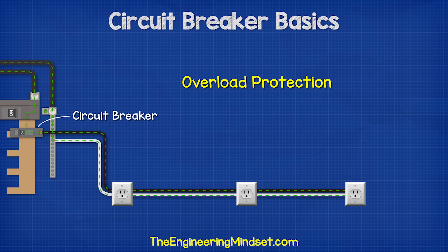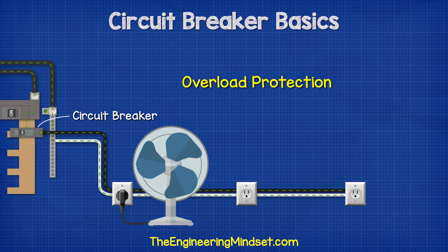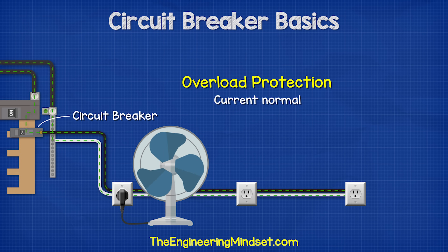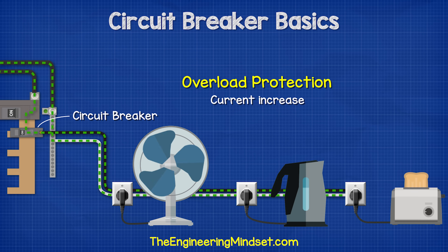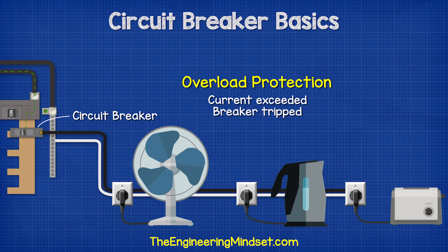With the overload function, if we slowly add more load to the circuit, we will eventually exceed the rating of the breaker and it will flip to cut the power and protect the circuit. This is known as overload protection.